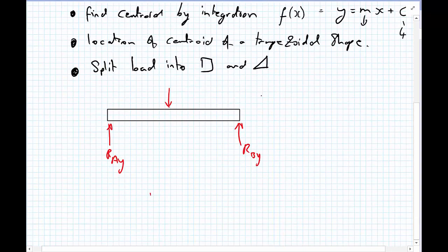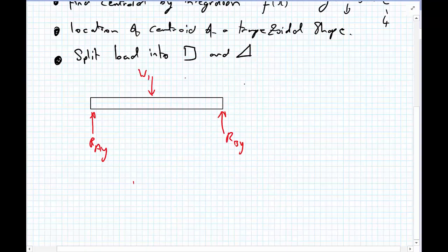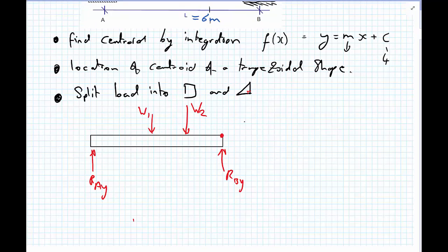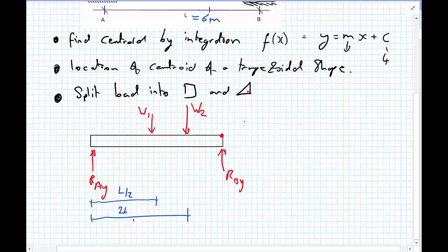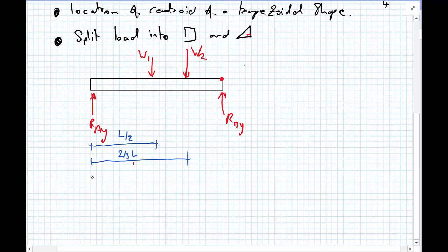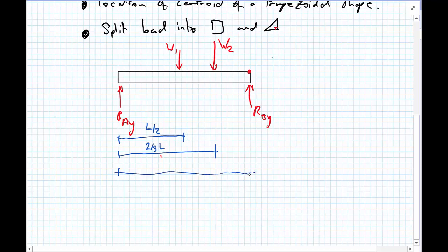Then I'll have in the centre of the beam what I'm going to call W1, and two thirds of the way along the beam I have W2, because it's a triangle and the right angle is at this end. The distance to W1 is L upon 2, and the distance to W2 is two thirds of L. The total length of the beam is L, and in this case we're saying that L equals 6 metres.